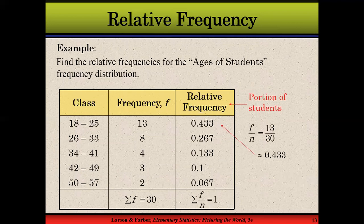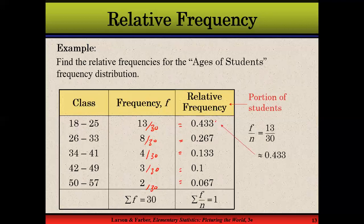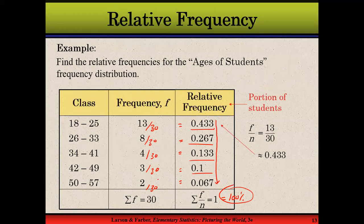Continuing with the student age example and using the same relative frequency formula, we can calculate relative frequencies for all classes. One important thing to notice: when you add up all the relative frequencies, they sum to one, or 100%. In our example: 43.3%, 26.7%, 13.3%, 10%, and 6.7% — together these make exactly 100%.